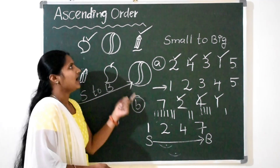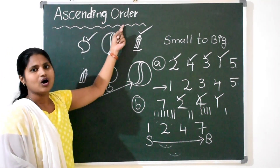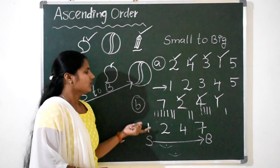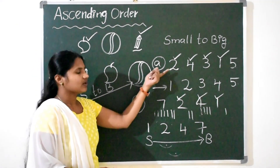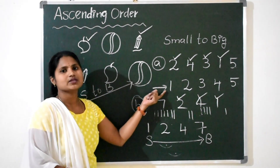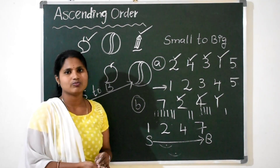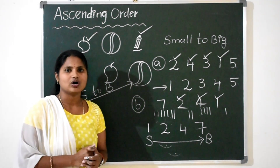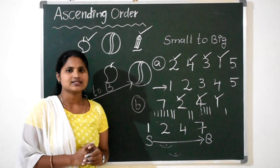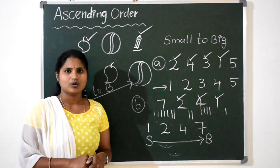This is called Ascending Order. In ascending order, whatever numbers are given, we have to arrange them from smallest to biggest. If we write numbers from smallest to biggest, that is called Ascending Order. Let us take some more questions to understand in a better way.